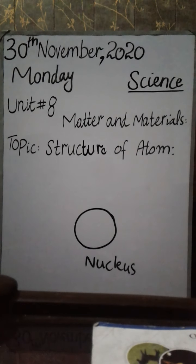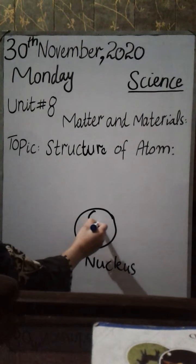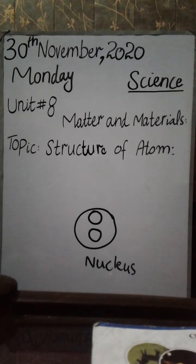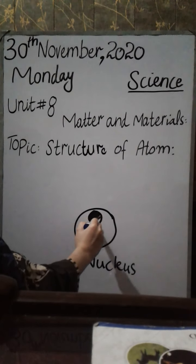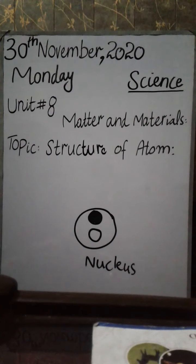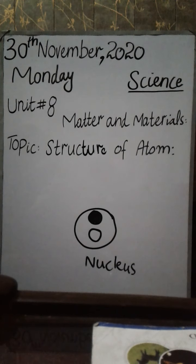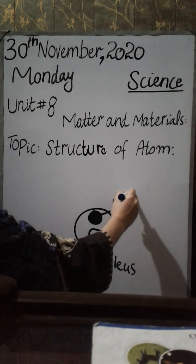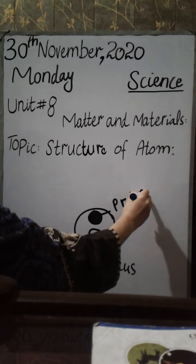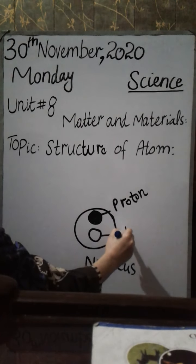Now, in the nucleus there are two other smallest particles which we call proton and neutron. To help you understand and differentiate them, I will give one a dark color and one a white color. The dark one we call proton, and the white one is the neutron.